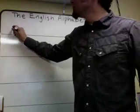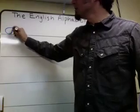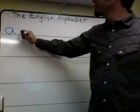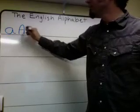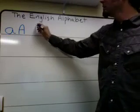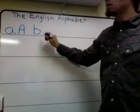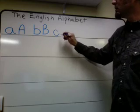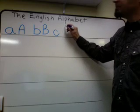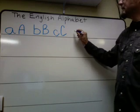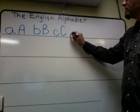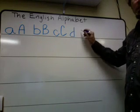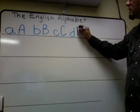A usually starts like this, capital A. B, capital B. C, capital C. D, capital D.